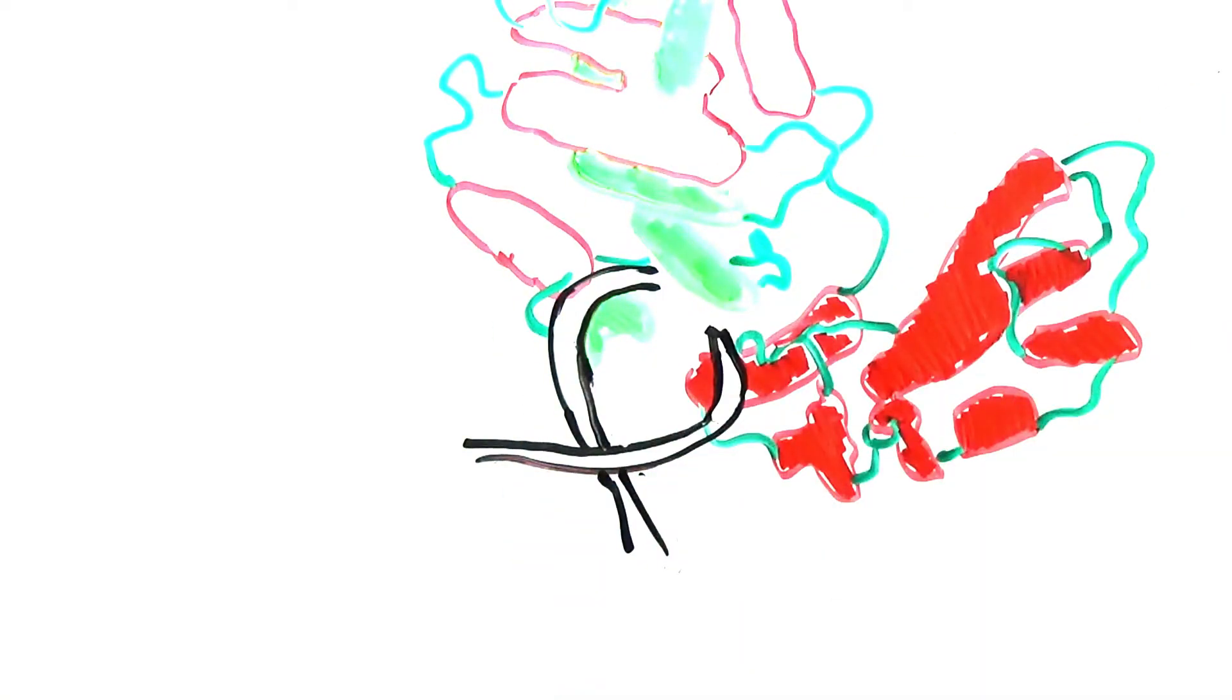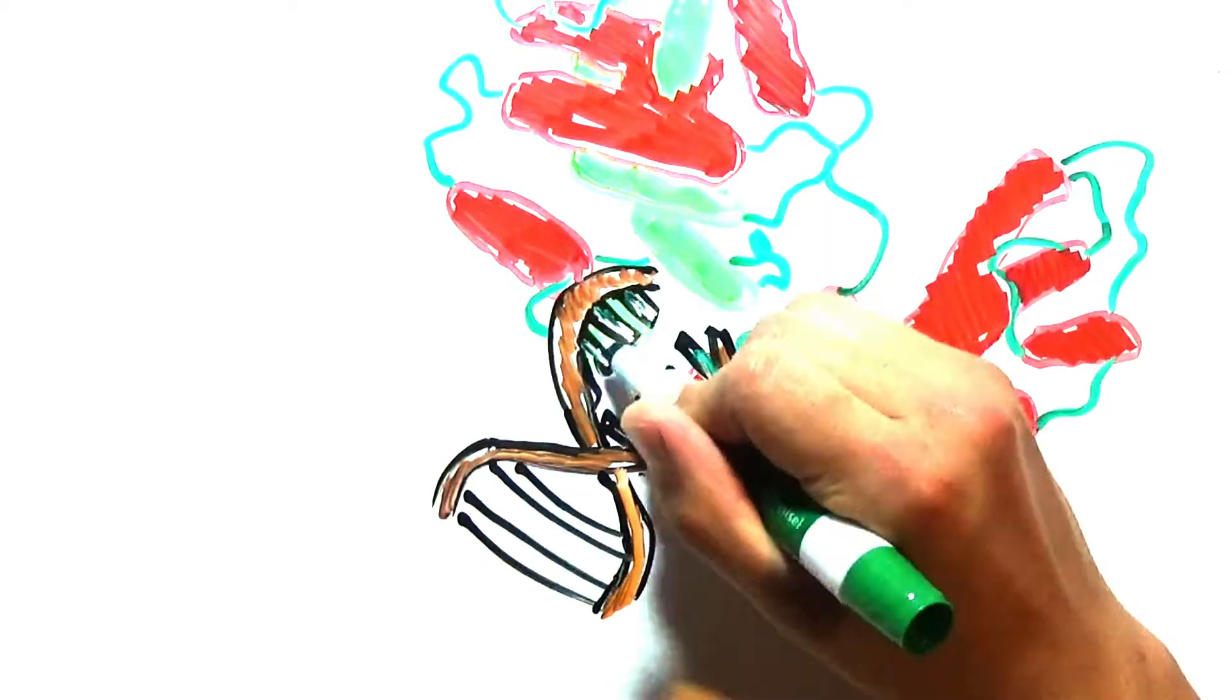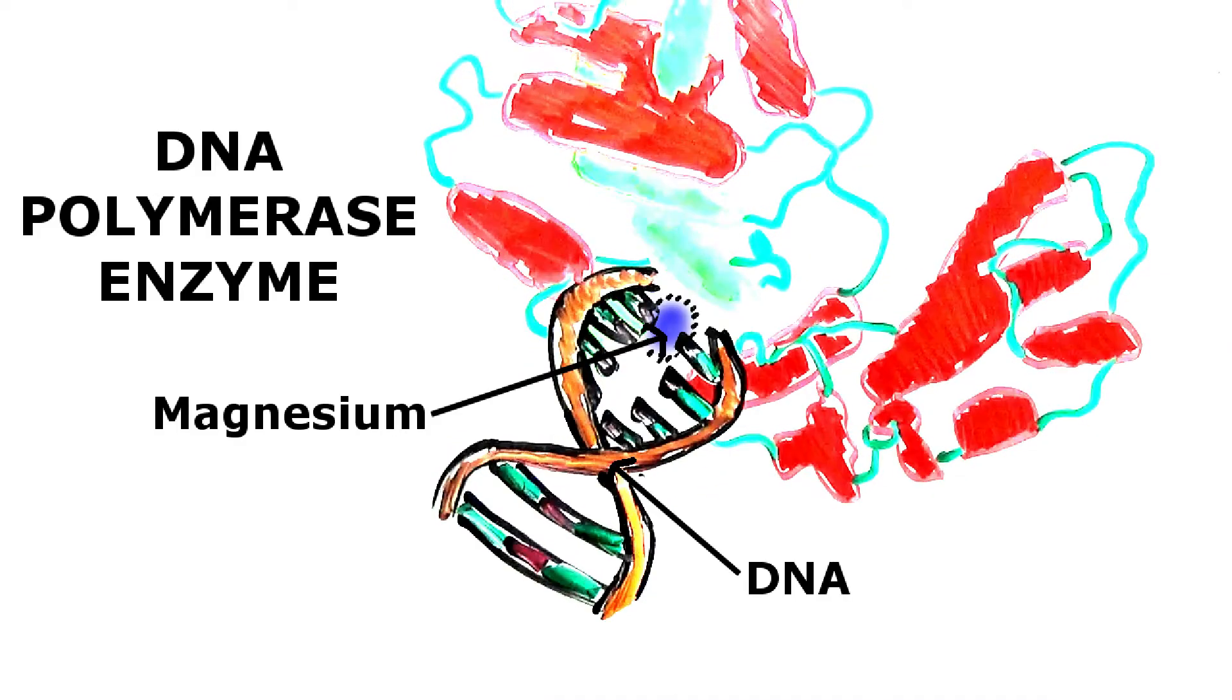An important enzyme activated with a magnesium cofactor is DNA polymerase, which makes copies of DNA and is necessary for repair, growth, and the formation of sperm and egg cells.